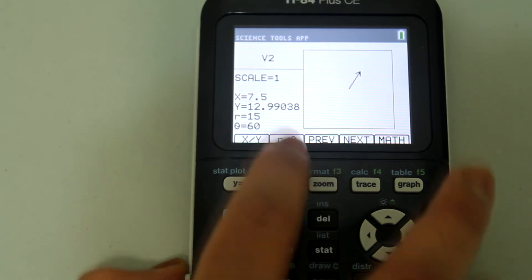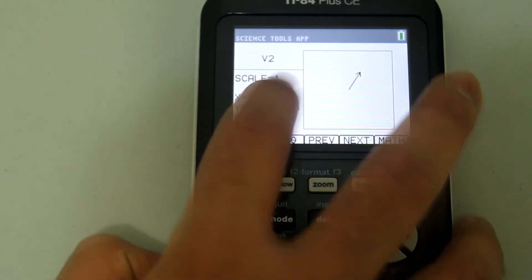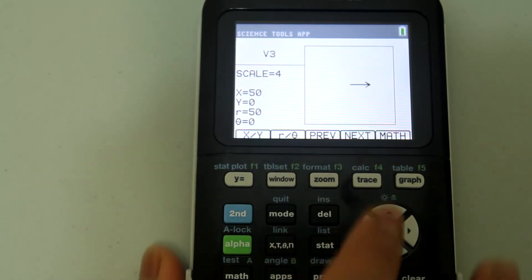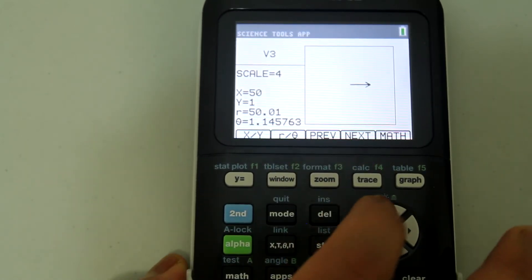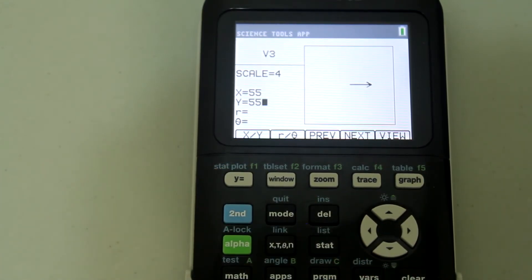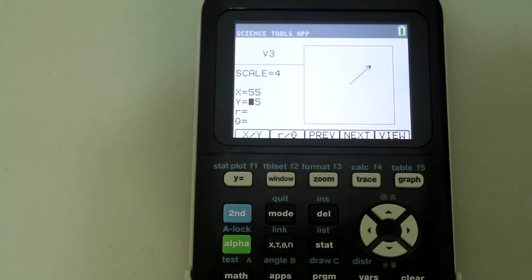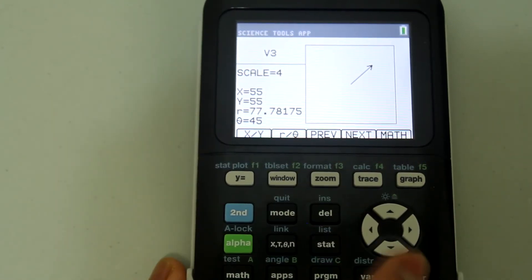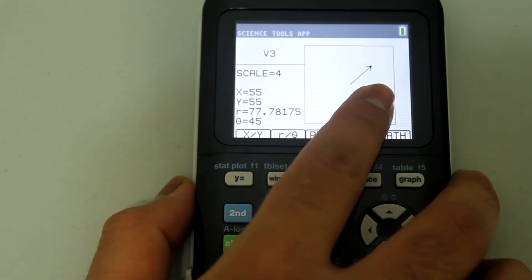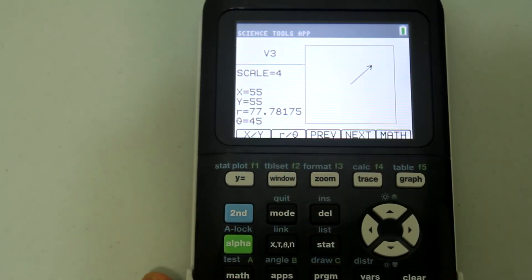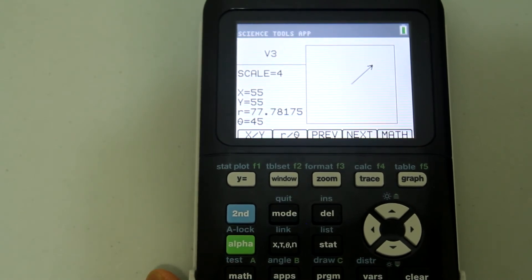Now you might be wondering what the scale is. Let's go on to the next vector. If you have a really large vector, say 55 with a y component of 55, enter graph, you see that the scale is 4. But the vector drawn here is relatively small and looks like the one we already had which had x and y components of 10.